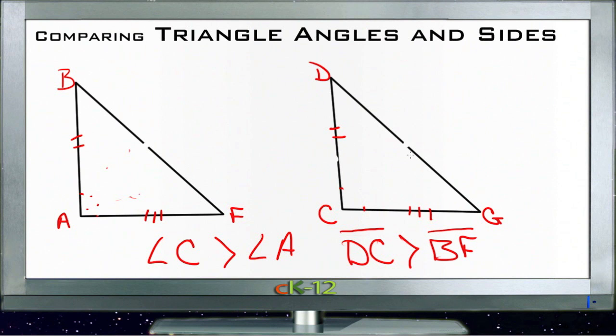Working the other way, if I tell you that the sides are congruent as marked, but that specifically DG was greater than BF,